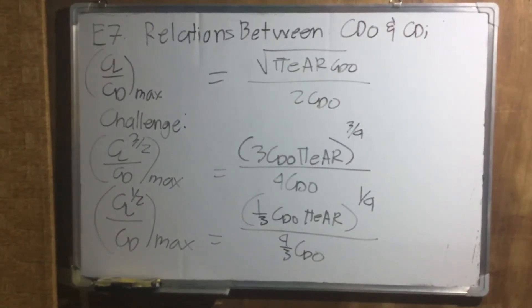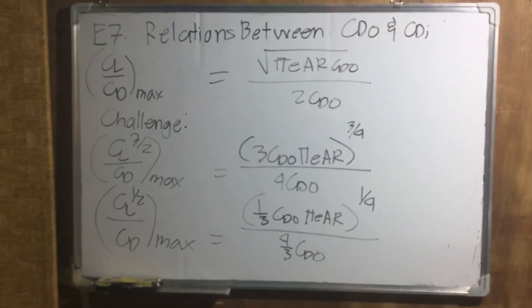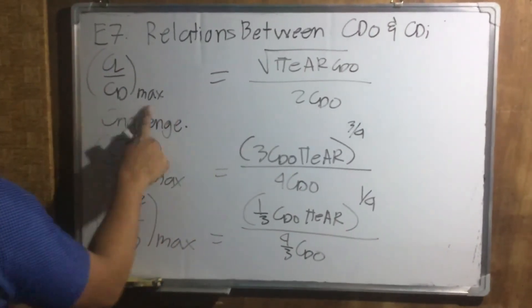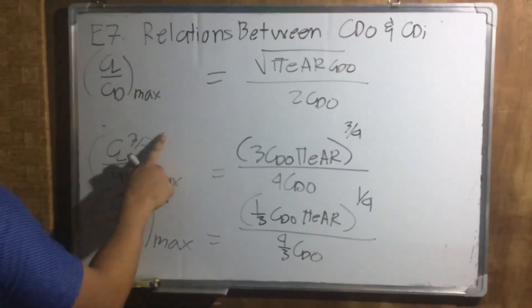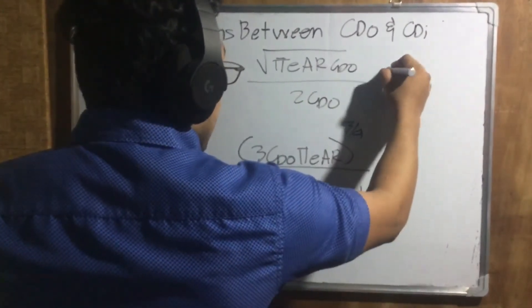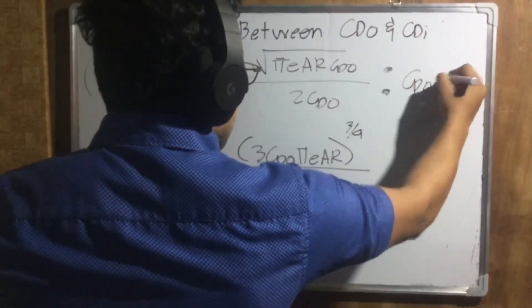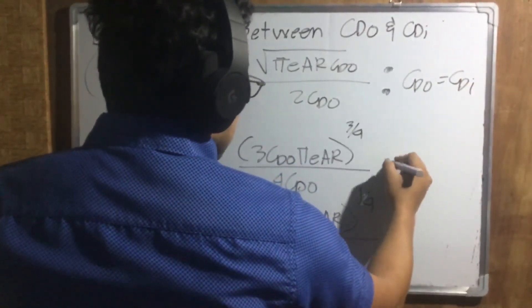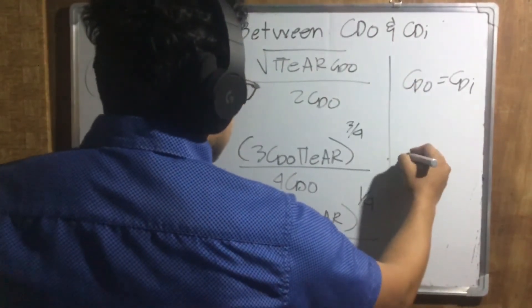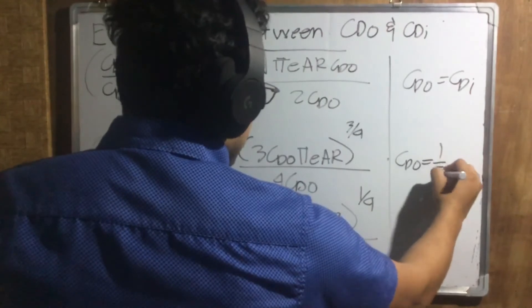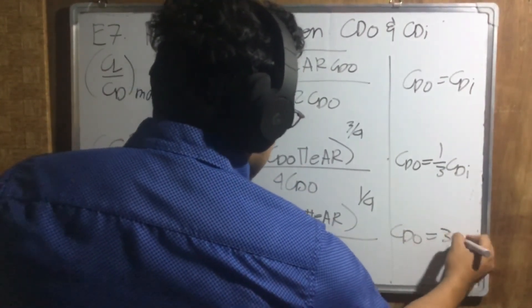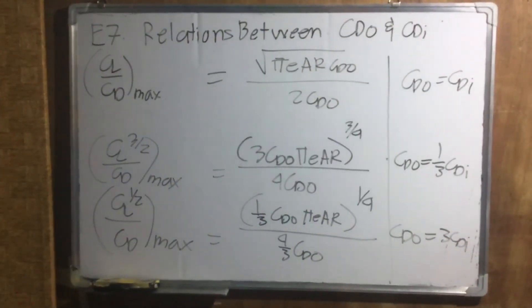Those are the formulas we'll use. That's our challenge. Let's remove the challenge from here. Those are our challenges, where here CDO equals to CDI. Let's make it a line. Here CDO is equals to one third CDI. And here CDO equals to 3 CDI. That's the relationship between CDO and CDI.